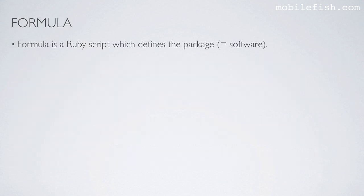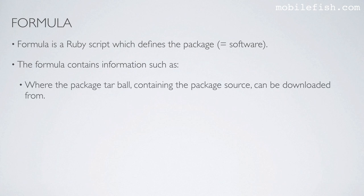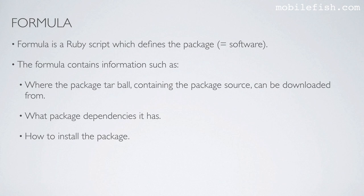Now I will explain often used Homebrew Package Manager terms. I will start with formula. Formula is a Ruby script which defines the package — a package is another name for software. The formula contains information such as where the package tarball containing the package source can be downloaded from, what package dependencies it has, and how to install the package.